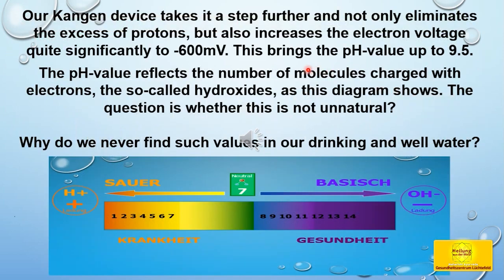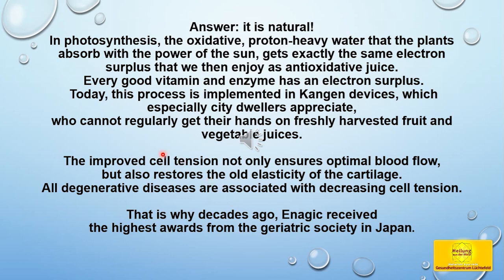Our Kangen device takes it a step further and not only eliminates the proton axis, but also increases the electron voltage quite significantly to minus 600 millivolt, bringing the pH value up to 9.5. The pH value reflects the number of molecules charged with electrons — the so-called hydroxides — as this diagram shows. In photosynthesis, the oxidative, proton-heavy water that plants absorb with the power of the sun gets exactly the same electron surplus that we then enjoy as anti-oxidative juice. Every good vitamin and enzyme has an electron surplus. Today, this process is implemented in Kangen devices, which especially city dwellers appreciate, who cannot regularly get their hands on freshly harvested fruit and vegetable juices.